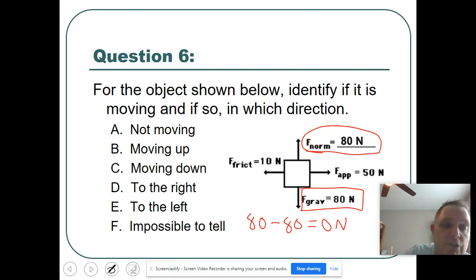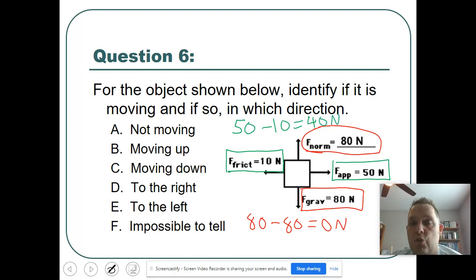Now let's look at the other two. I'm going to change to green here. We have friction, which is slowing us down, which is 10. And then we have an applied force, think of you pushing it at 50. And they're in opposite directions. So I have 50 minus 10 will give me 40 Newtons of force going to, and look at the arrow, to the right. So let's look at our answers. Not moving, moving up, moving down, to the right, or to the left. In this case, we are moving to the right. So the answer is D.